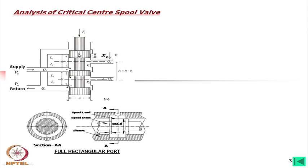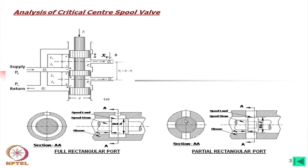Usually you will find that these three lands are of equal width; however, the middle one might be more or less, but the two outer lands are equal to each other and equal to their respective ports. For a partial rectangular port also, the width of any rectangular groove made there is equal to the land width.